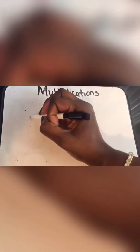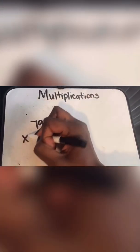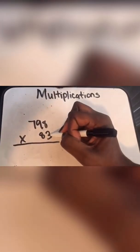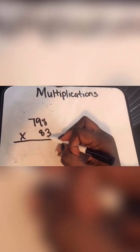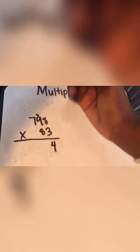Okay, now we're going to be doing three digits by two digits. 798 times 83. Three times eight is 24. So we're going to put the four here. We're going to put a small two right here.